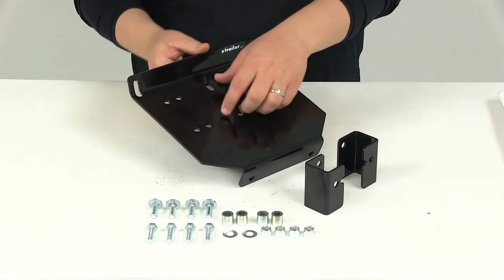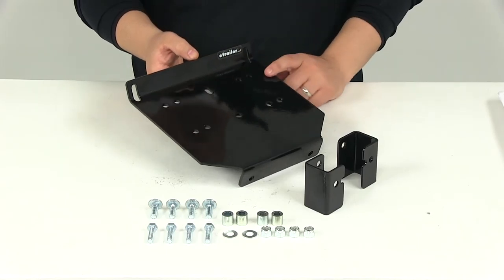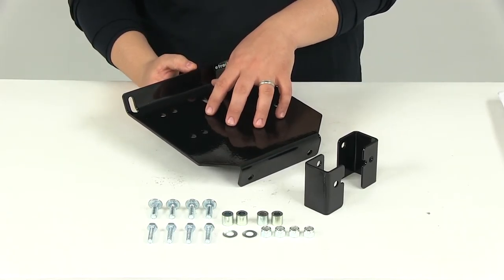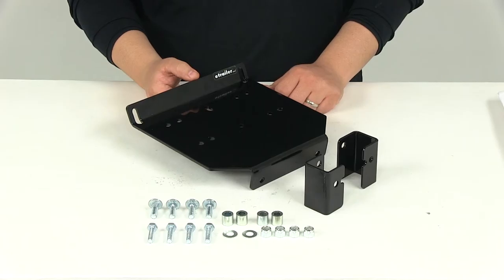To get the winch mounted on here, you can see that it's got the different mount holes right here. To get the winch mounted onto the custom bracket, you're going to use the hardware that was supplied with your winch.